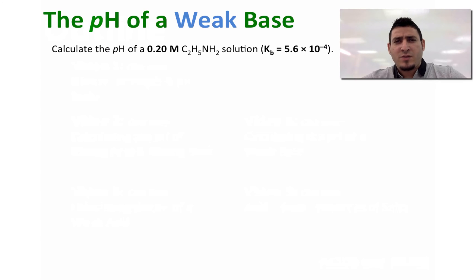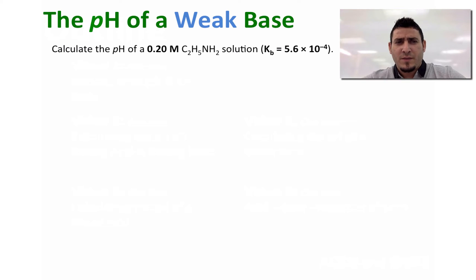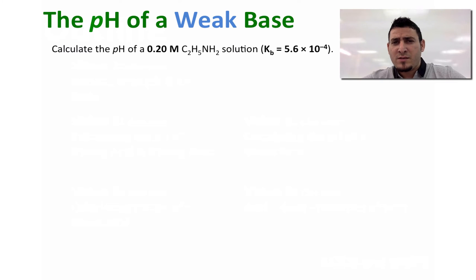Now to find the pH of a weak base, it's very similar to finding the pH of a weak acid. We will also need to follow 11 steps. I will walk you through each and every step. But before that, let's read the question. The question says: calculate the pH of a 0.20 molar solution of ethylamine where the Kb is given as 5.6 times 10 to the power minus 4.